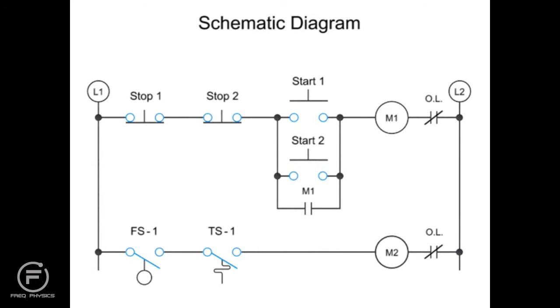Schematic diagrams with graphical symbols are used to show the electrical connections and functions of a specific circuit. This line, or ladder diagram, shows various electrical components interconnected by lines. These lines are arranged like rungs on a ladder.